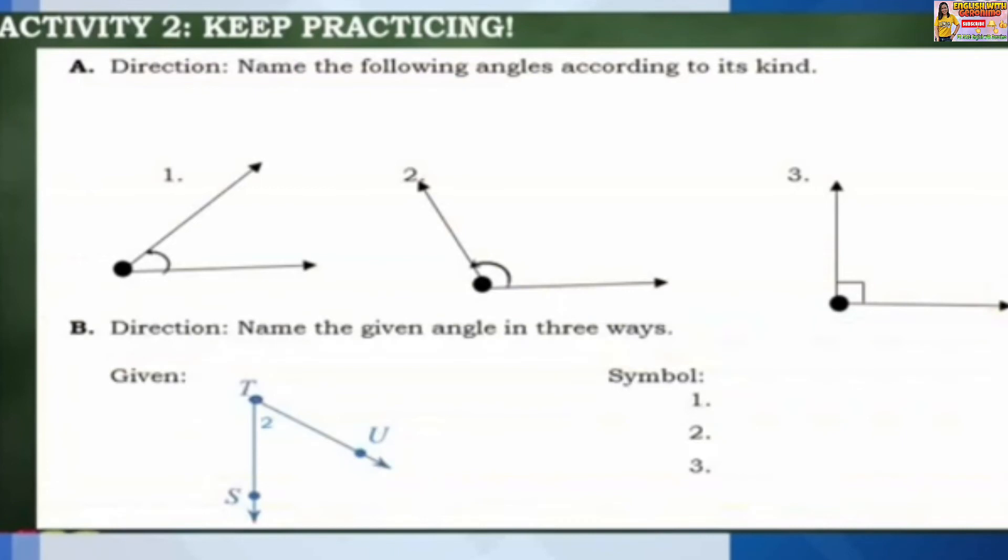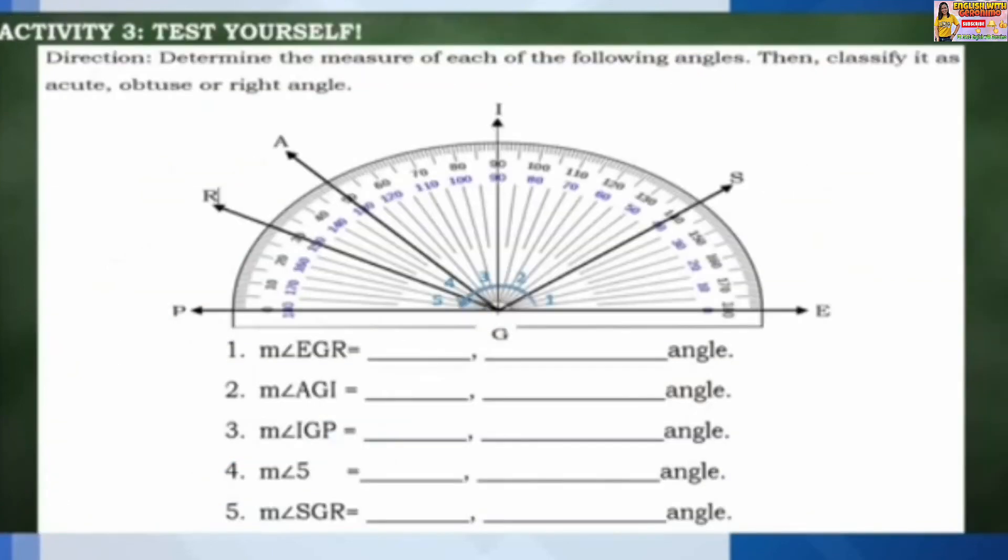Activity Number 2: Keep practicing. Name the following angles according to its kind and name the given angle in three ways. Activity 3: Test yourself. Determine the measure of each of the following angles, then classify it as acute, obtuse, or right angle.